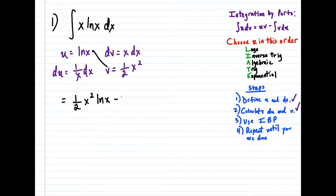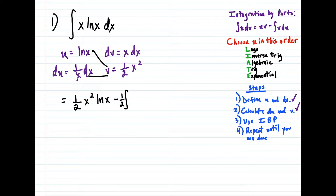And now we have minus the integral of v times du. So v du is the product of these two terms here. When we multiply these two, we're going to have one half — and that one half we could just write outside of the integral as a coefficient — and we have one over x times x squared, which is just x.